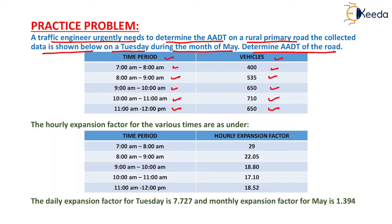The hourly expansion factors for the various time periods are as follows: for 7 to 8, the hourly expansion factor is 29; for 8 to 9, it is 22.05; for 9 to 10, it is 18.80; for 10 to 11, it is 17.10; and for 11 to 12, it is 18.52.